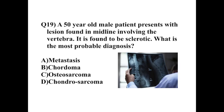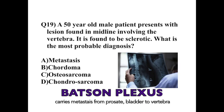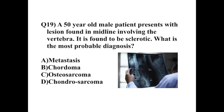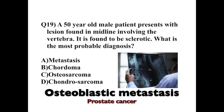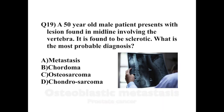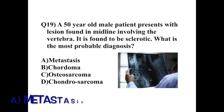The question also mentions a malignant lesion in the vertebra. Batson's plexus connects the deep pelvic veins draining the bladder, prostate, and rectum to the internal vertebral venous plexus in the vertebra. You've also been taught that the osteoblastic metastatic tumor of the bone is prostate carcinoma. Hence, the answer to this question is metastatic prostate cancer in a 50-year-old male patient.